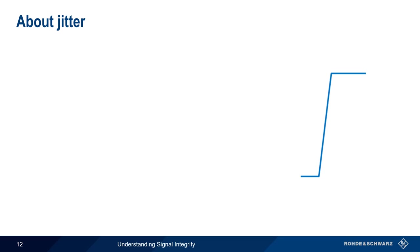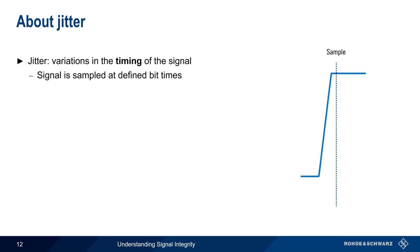Another very important topic in signal integrity is something called jitter. Jitter can be defined as variations in the timing of the signal. Digital data signals are sampled at defined intervals, or bit times, where we use voltage levels at those times to decide if we've received a one or a zero.